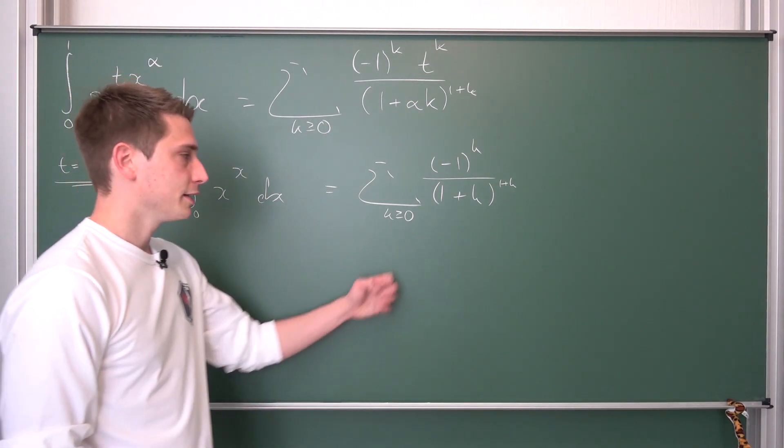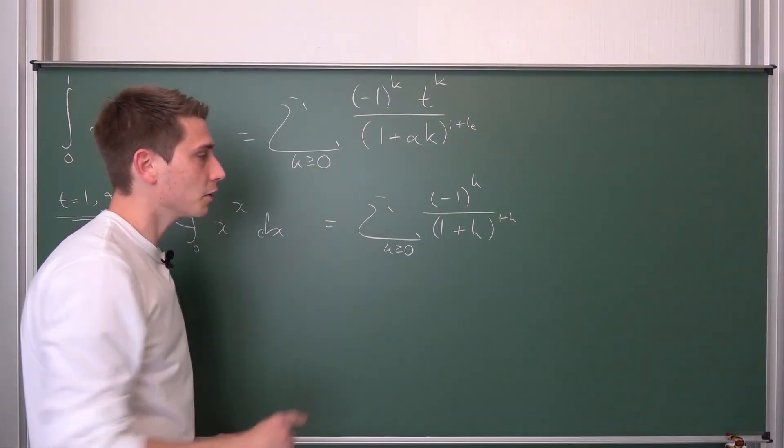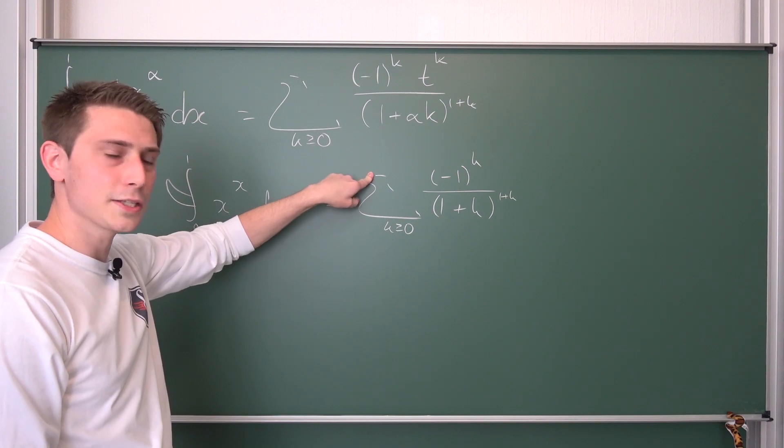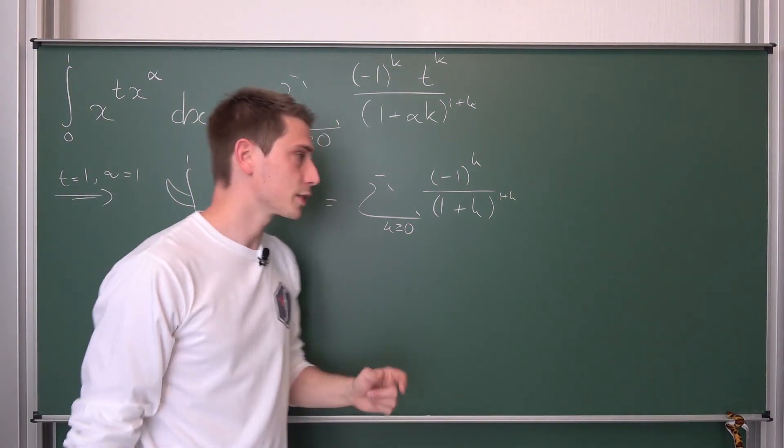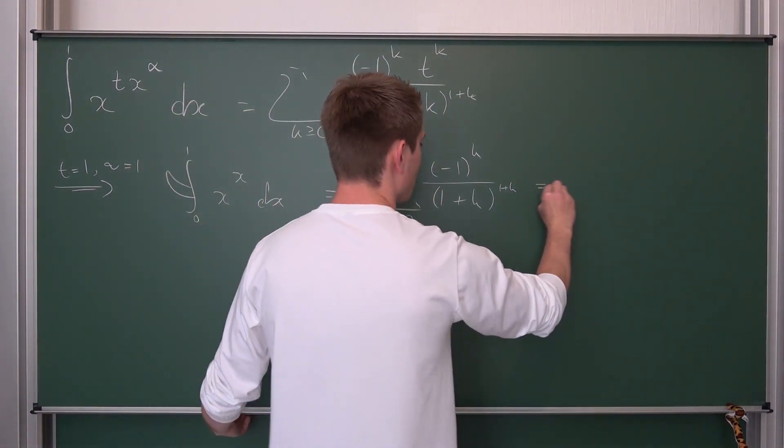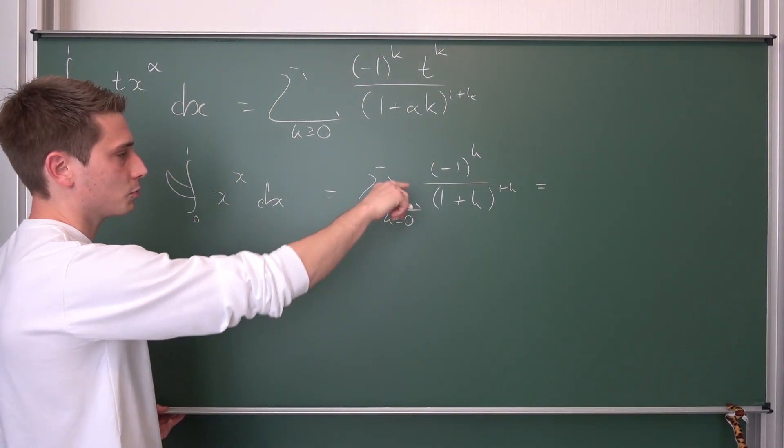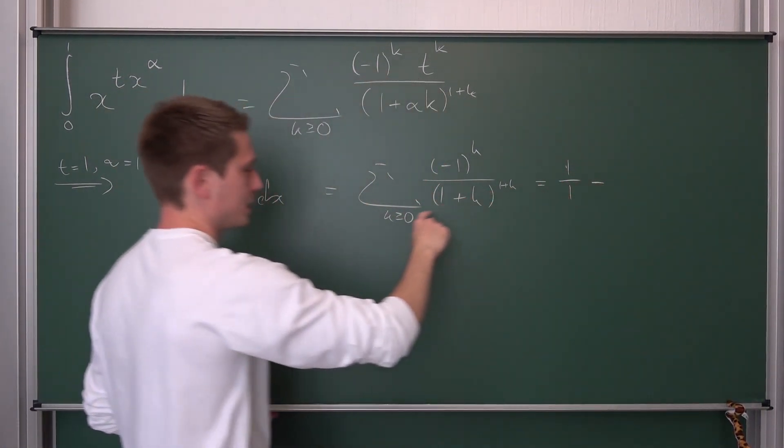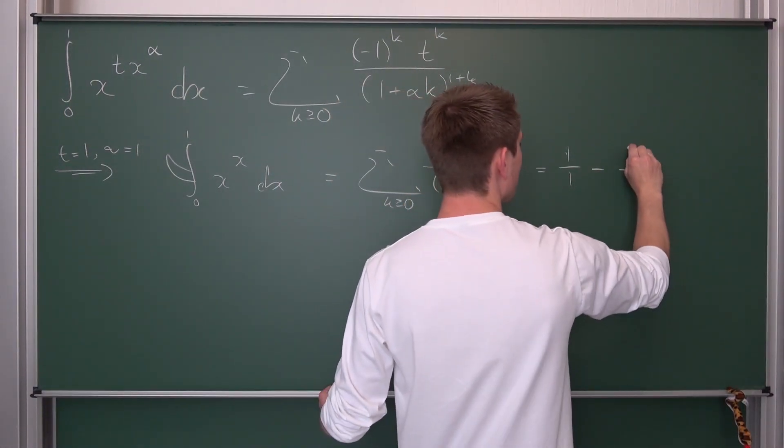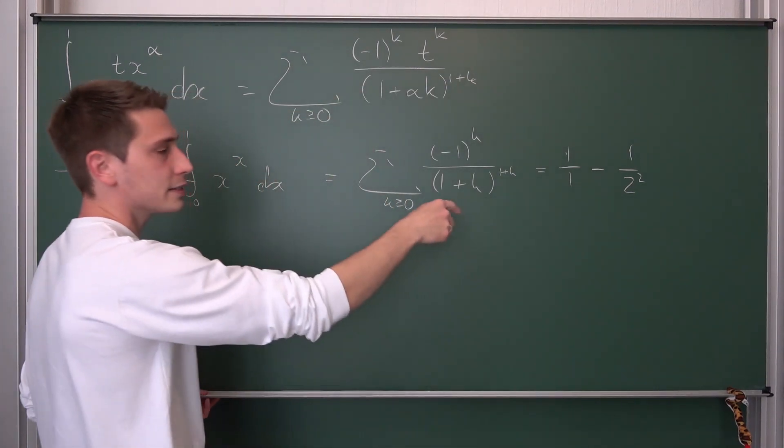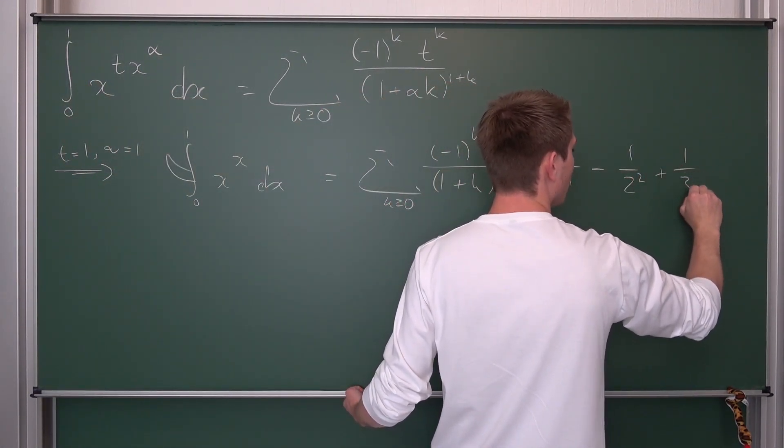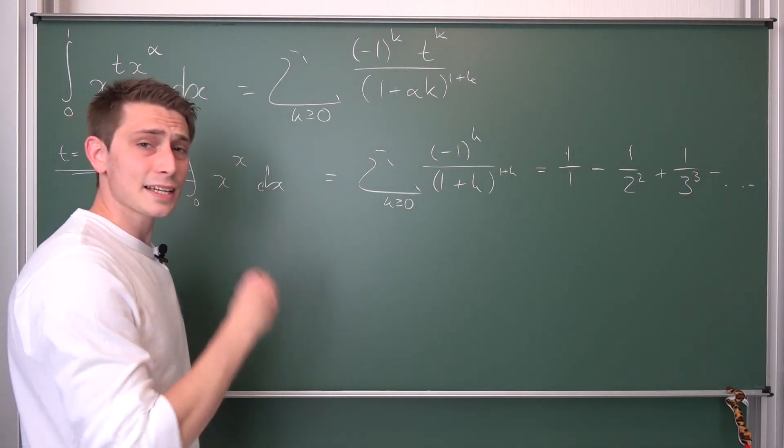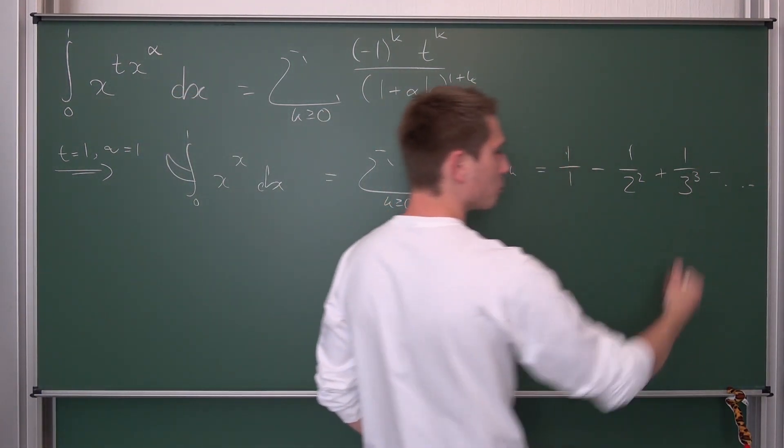And do you know what the cool thing about the alternating series of those types are? You can truncate them extremely early like after the second term and you are so extremely close already to the real result. So what does this thing look like? Actually, if you write it out, that's going to be okay. First term is going to be positive. Zero, it's going to be just 1 over 1. The next up is going to be negative. This is we plug one into here. 2 over 2 squared. 1 over 2 squared, I'm sorry. Then the next one is going to be positive.